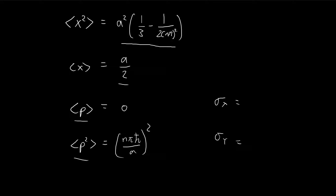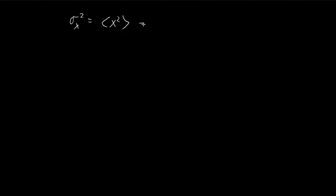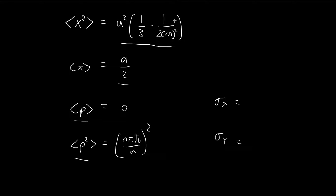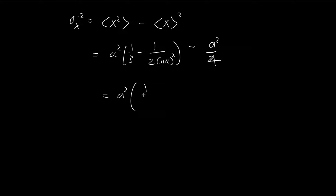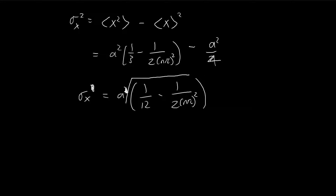Now that we have all this, we can find the standard deviations of x and p. Starting with the standard deviation of x, let's find the variance first: that's the expected value of x squared minus the expected value of x, all squared. Retaining our earlier term, we get one-third minus one-half over (nπ)², and the expected value of x squared is a² over 4. The one-third minus one-fourth gives one over 12, so this is the variance of x. The standard deviation is just the square root of that.